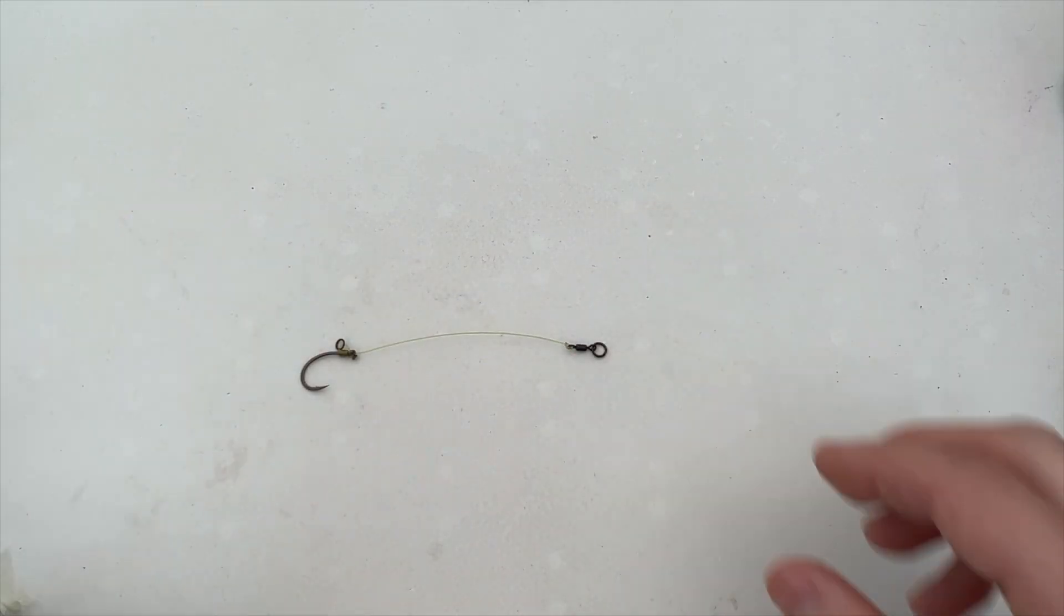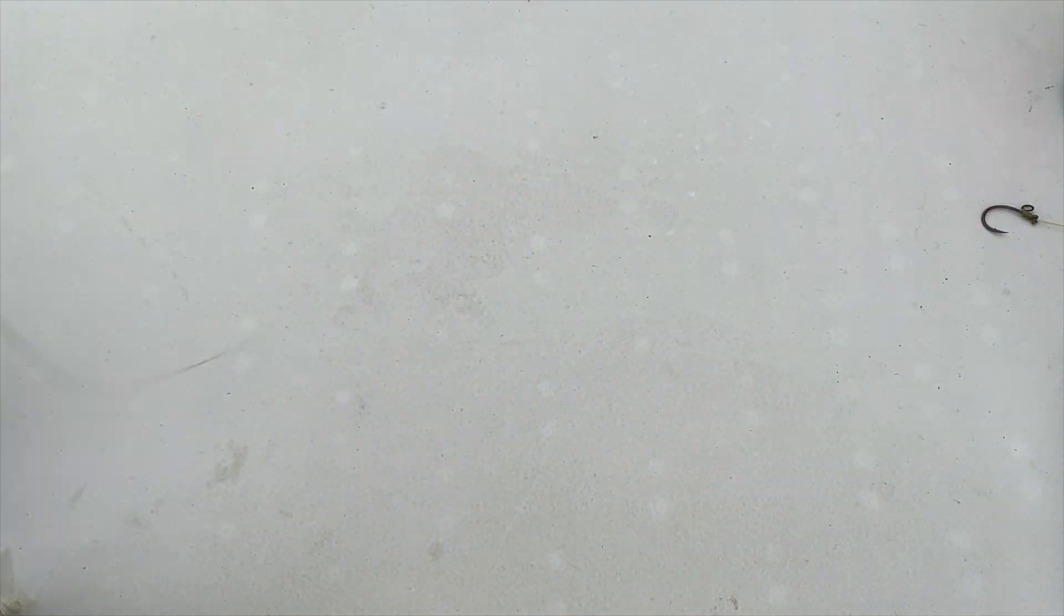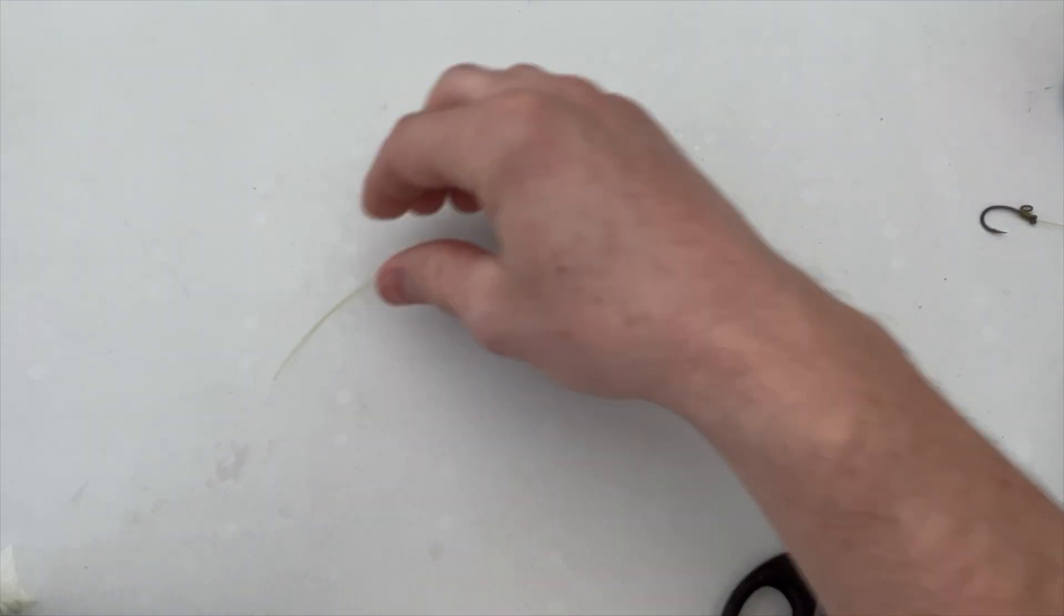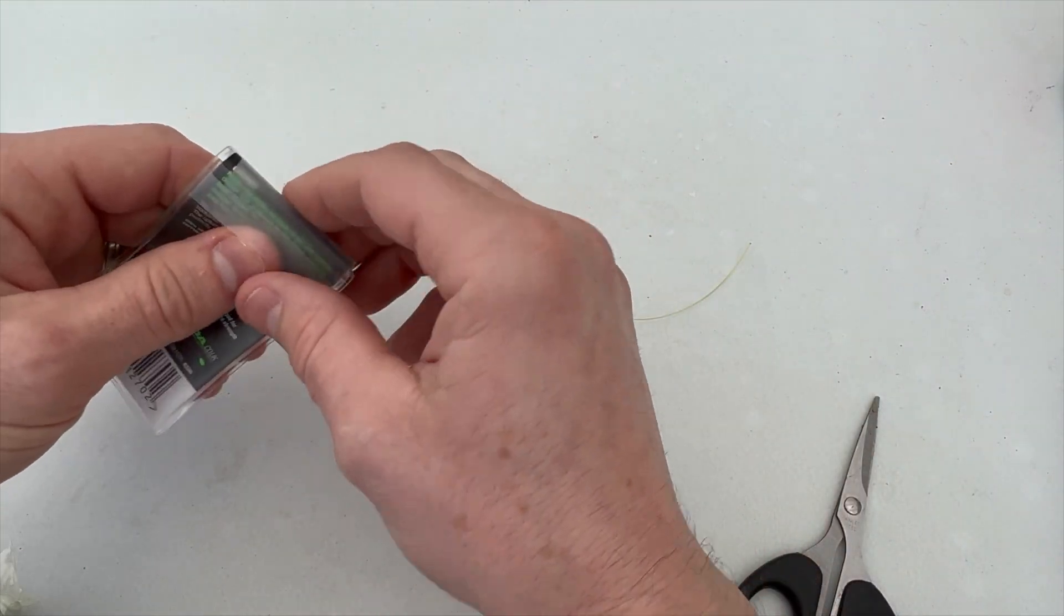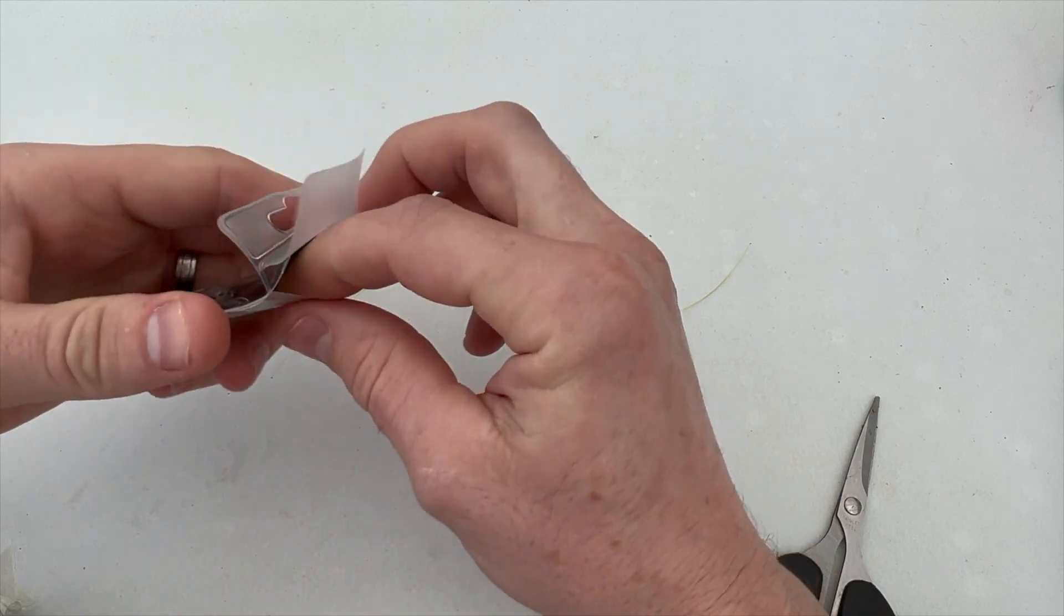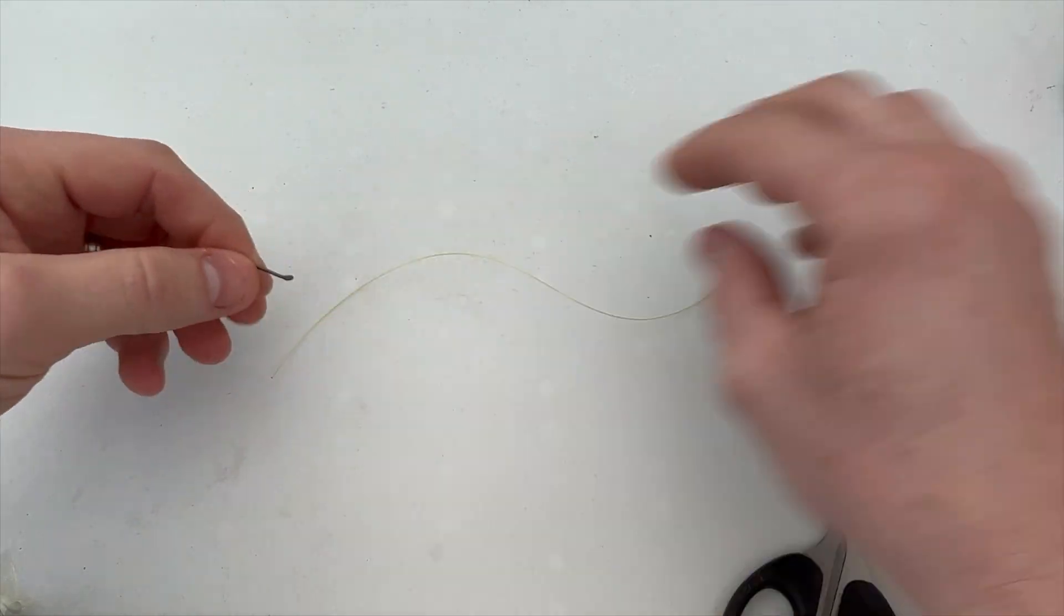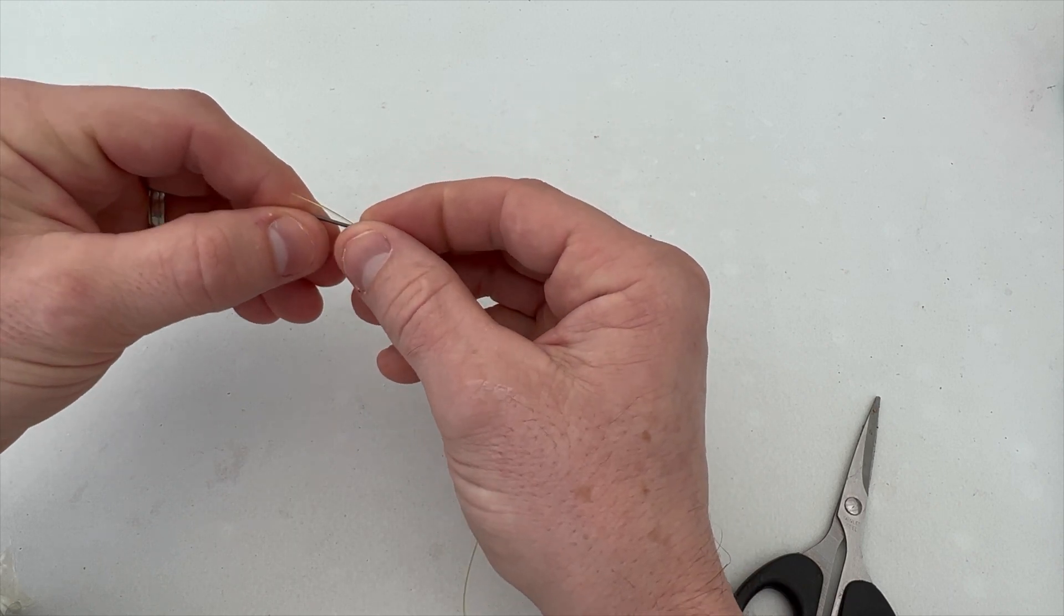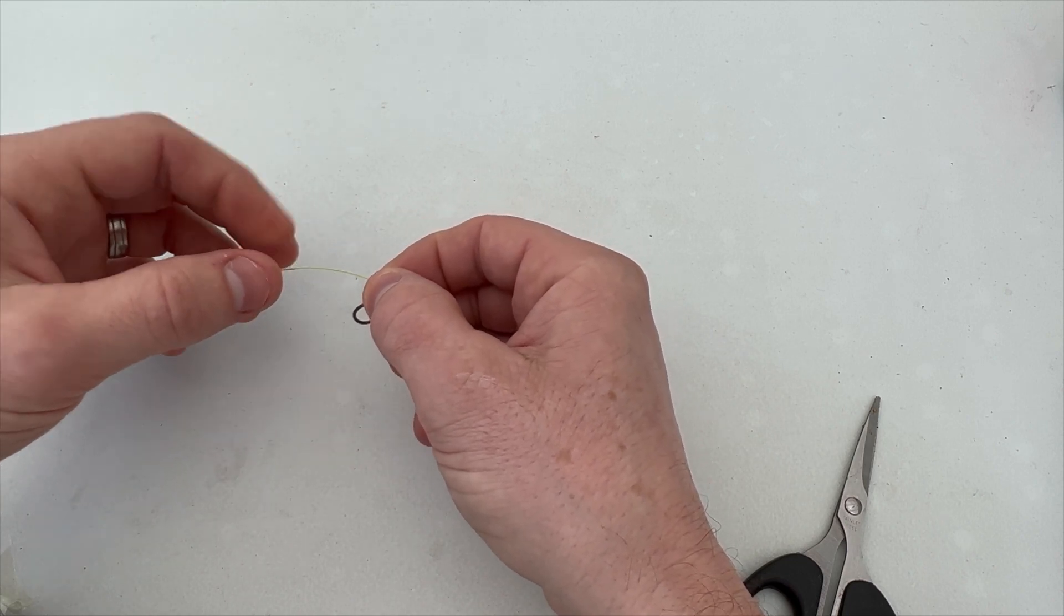So to create this choddy rig we want to start off by taking six to seven inches of our chod filament, and then we want to take our out-turned choddy hook and just thread through the back of the hook and leave about two inches of tagline which we use to create the D section of the rig.